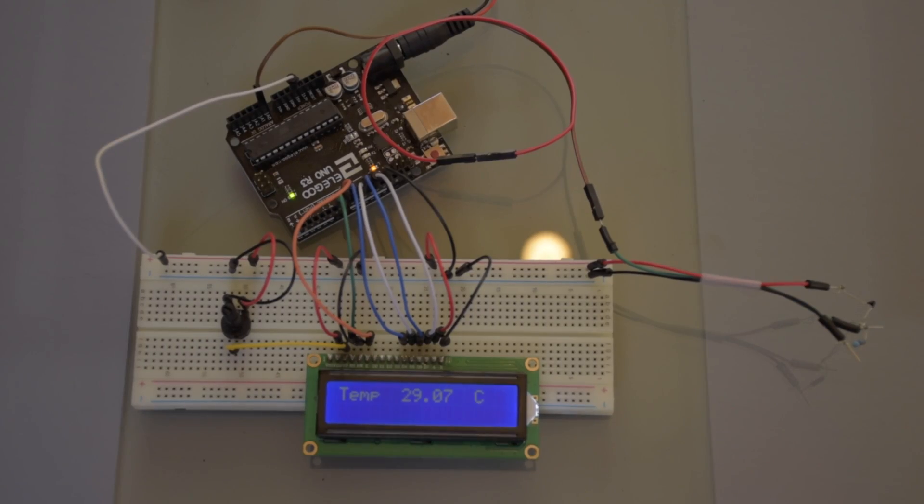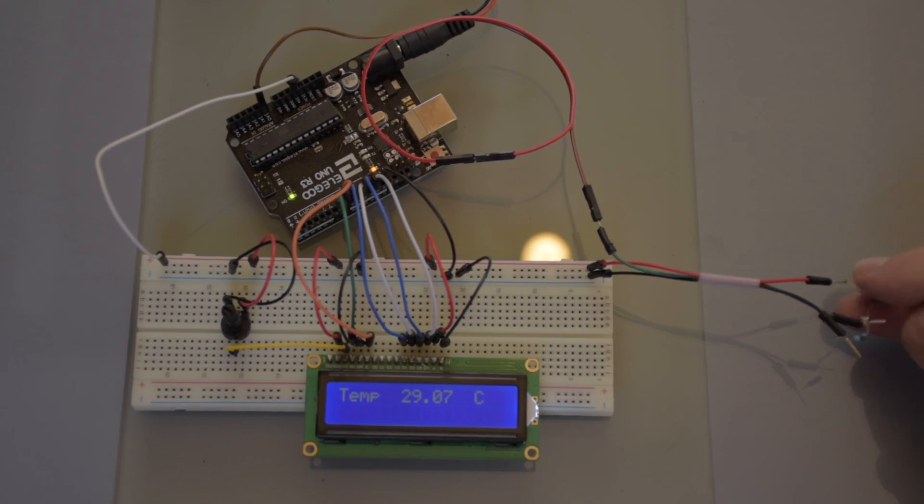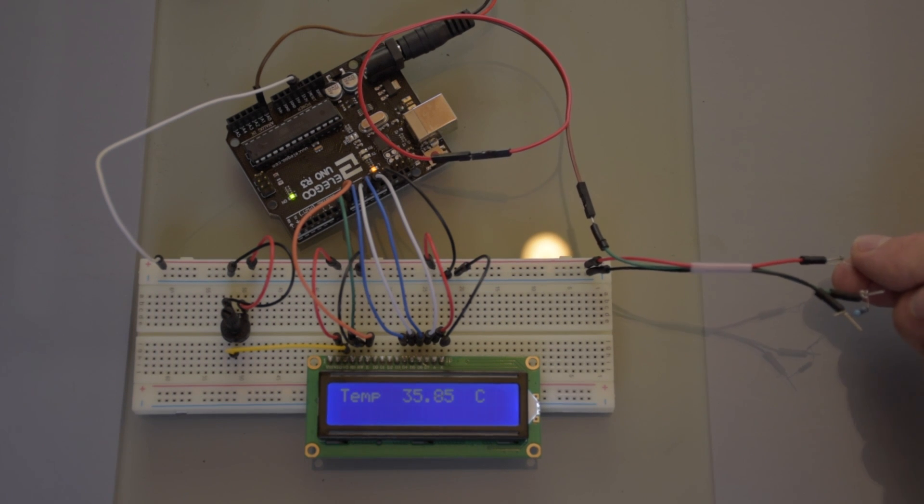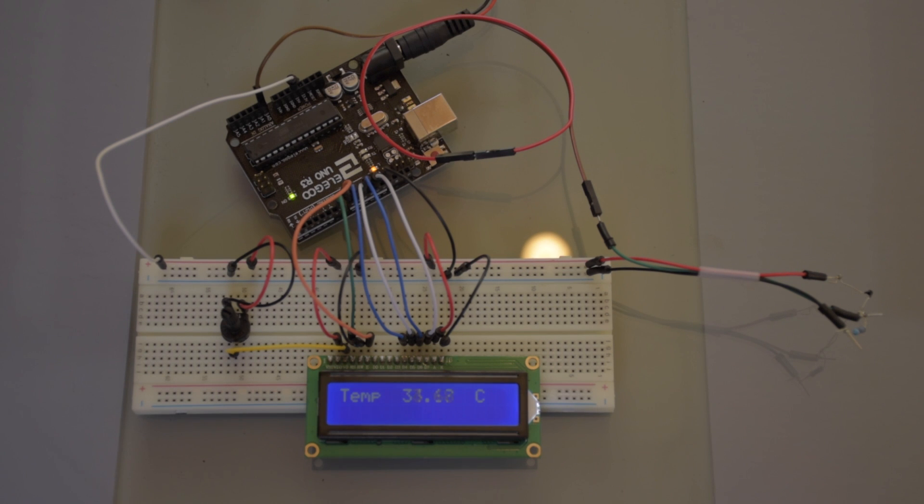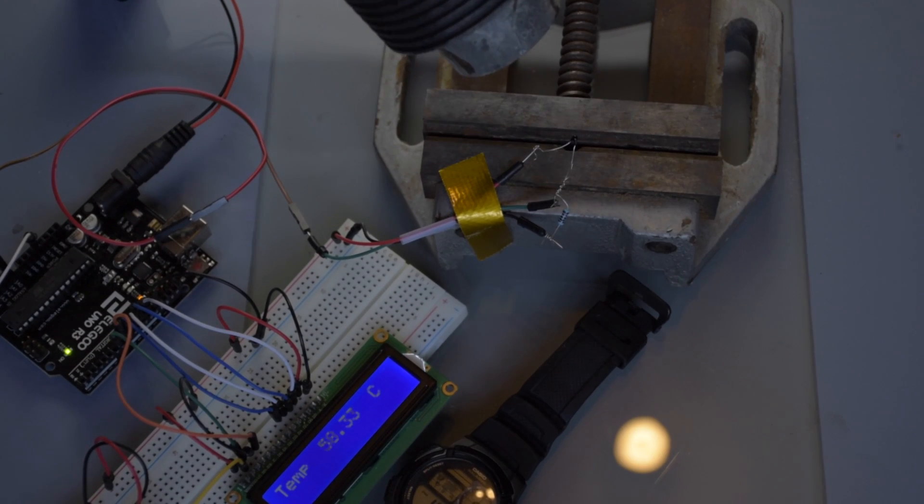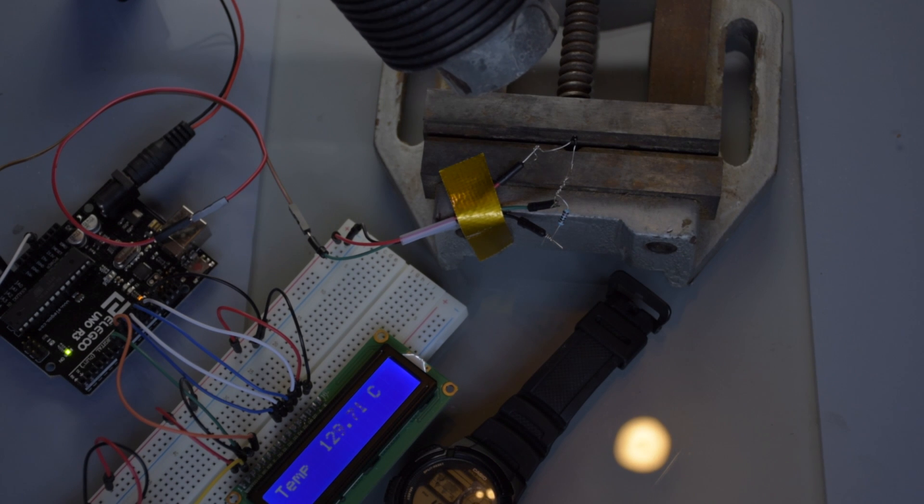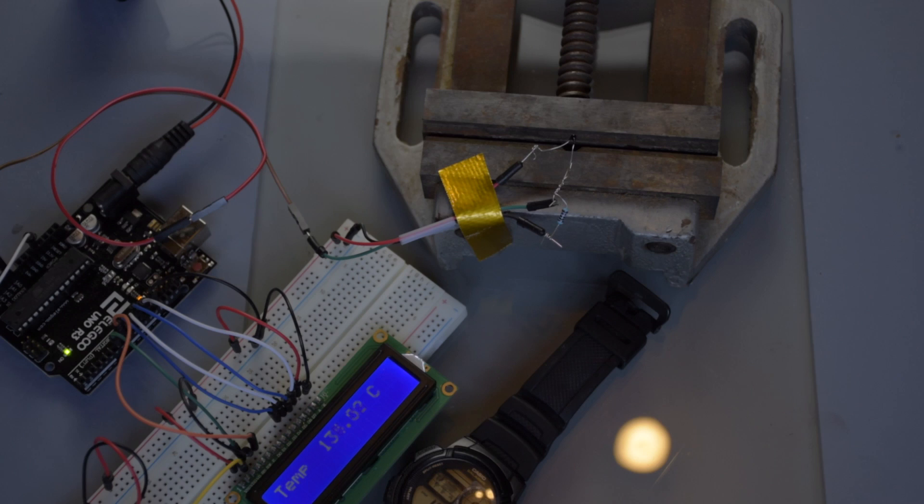And our second piece of equipment is a temperature sensor connected to an Arduino and an LCD display. This will allow you guys to see in real time the temperature changes. Here you can see that this heat gun gets the temperature sensor to about 135 degrees Celsius, which is the approximate heat range of most engine bays.